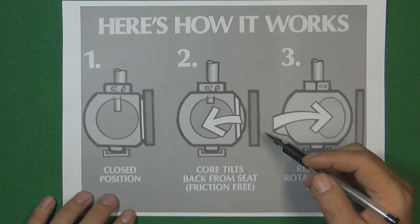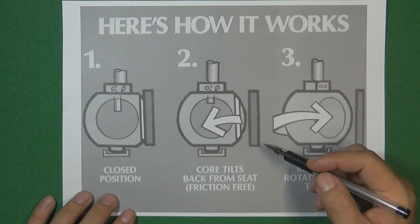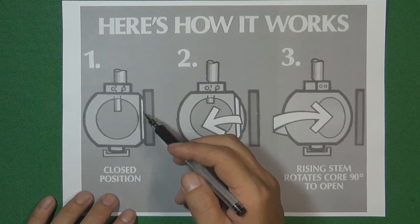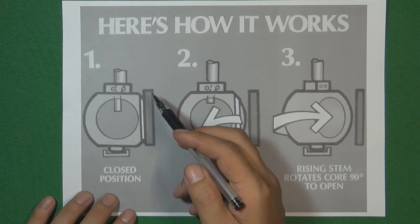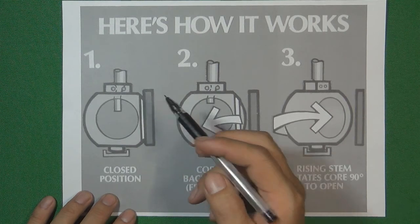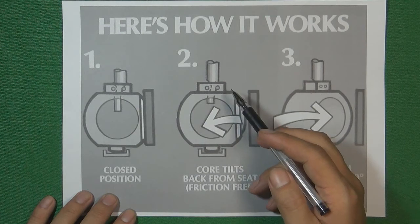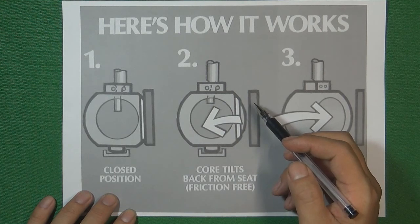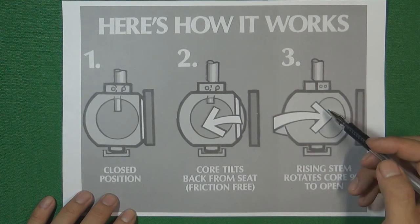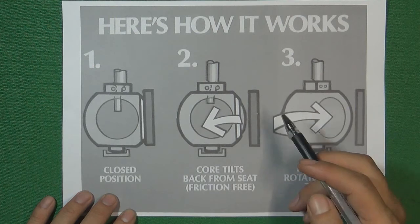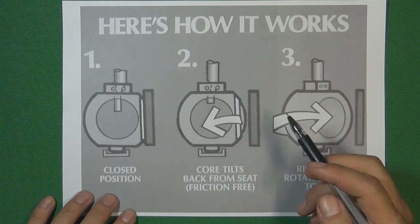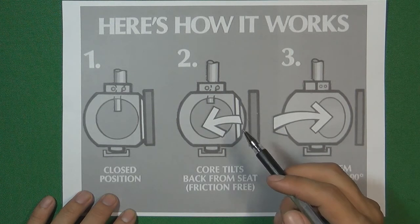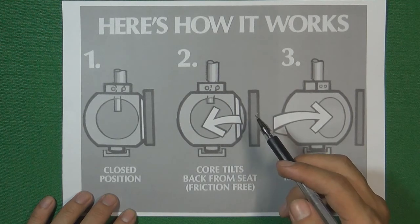This illustration explains how the orbit ball valve opens. First, in the closed position, the ball sealing face is touching the valve seat sealing face. Then we operate the valve stem to open the ball valve: the first movement is the ball leaving the valve seat, and then the ball turns. So this kind of design is very special — this kind of ball valve can work in very critical flow control systems. When we open it, the ball sealing face will never touch the valve seat sealing face.